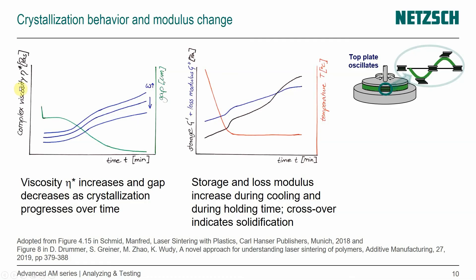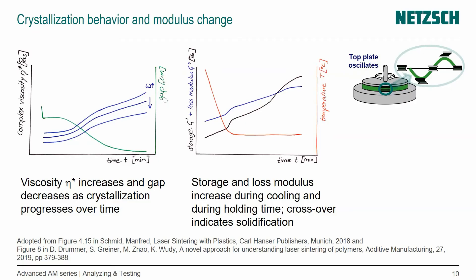The first I want to show is the complex viscosity. If we measure in oscillation rather than in rotation, we get that real and imaginary part of the viscosity. We can look at the complex viscosity similar as we look to the zero shear viscosity. And what's plotted here is this complex viscosity in blue,